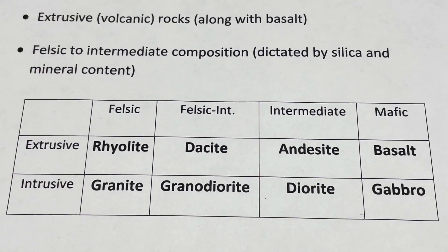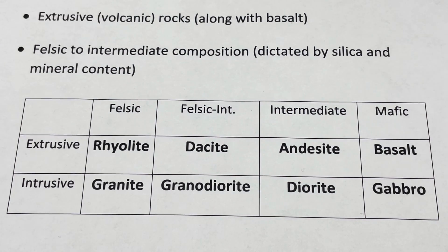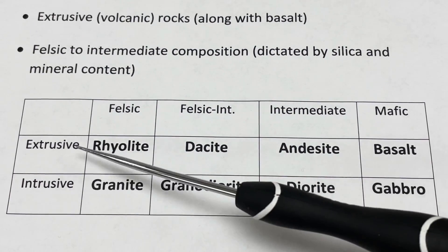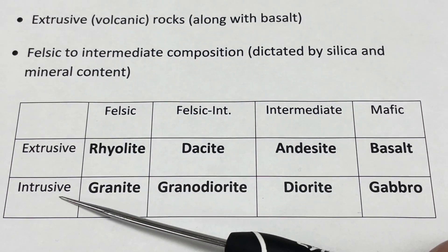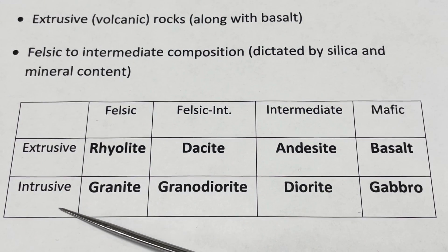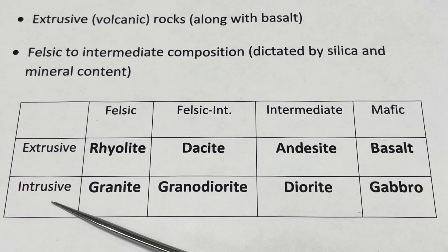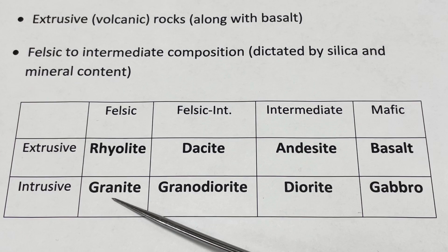Here's a summary of what we've covered so far with igneous rocks. The rows are distinguished by extrusive and intrusive. Rocks that form when magma cools underground will be intrusive because they'll have a phaneritic texture, meaning the crystals will be large and interlocking. That type of texture tells us the magma cooled slowly, and the mineral composition dictates which column we go to in the table.